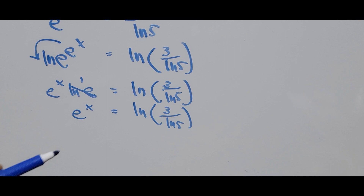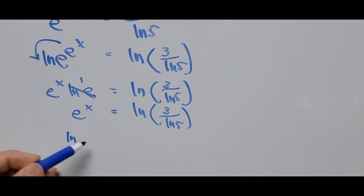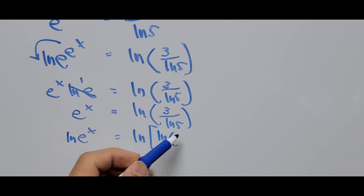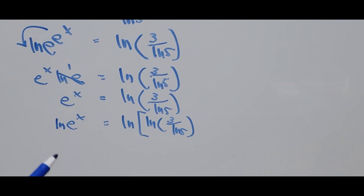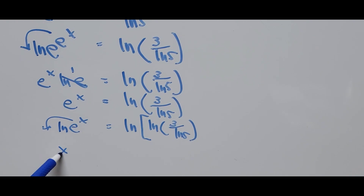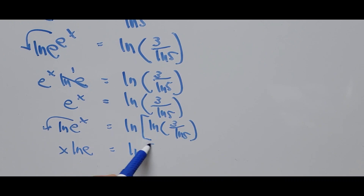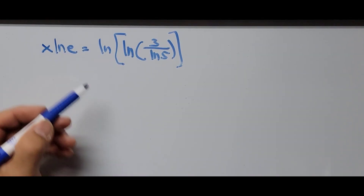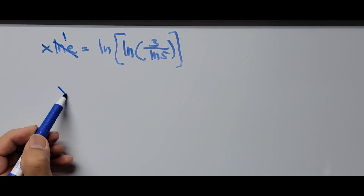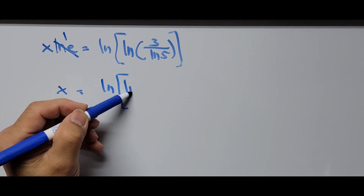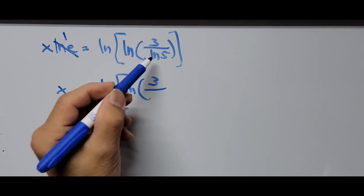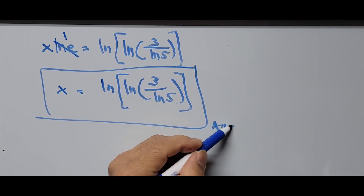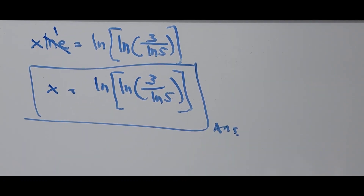We take the natural logarithm one last time on both sides: ln of e to the power of x equals ln of the quantity ln(3) divided by ln(5). Bringing x down as a coefficient, x times ln of e equals ln of (ln(3) divided by ln(5)). Since ln of e equals 1, the final answer is x equals ln of the quantity ln(3) divided by ln(5). This is our exact answer.